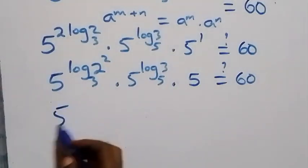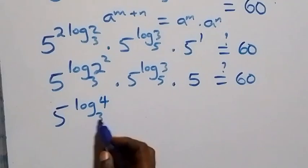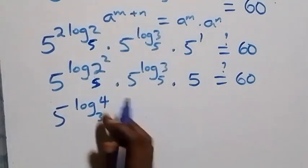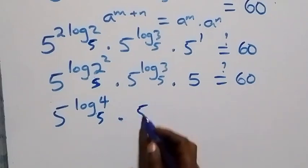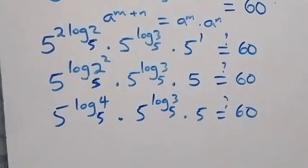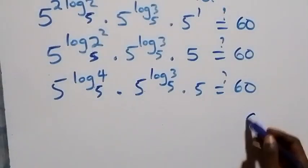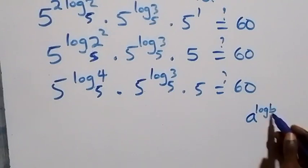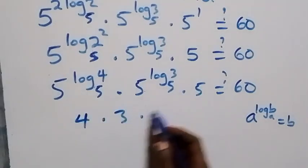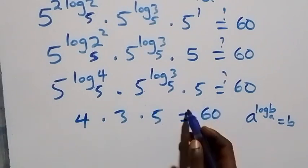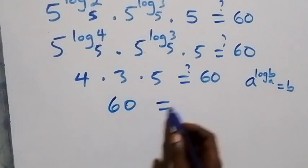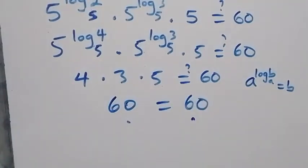So we have 5 raised to power log₅(4) times 5 raised to power log₅3 times 5. This follows the identity a raised to power log_a(b) equals b. So this becomes 4 times 3 times 5, which equals 12 times 5, that's 60, which equals 60 on the right-hand side. Left-hand side equals right-hand side.